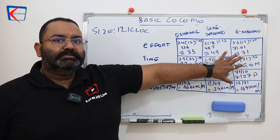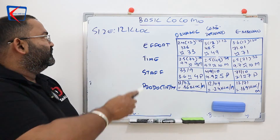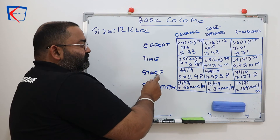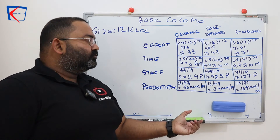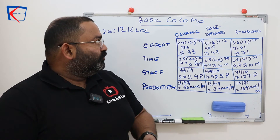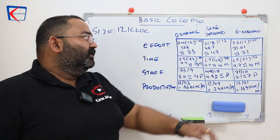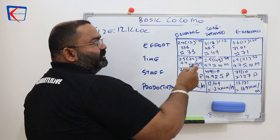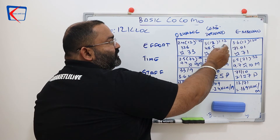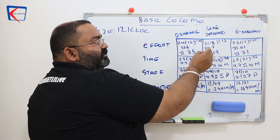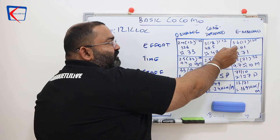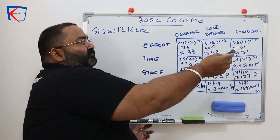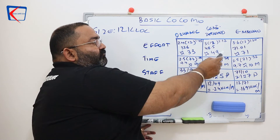Looking at this comparison table, the software size is 12 KLOC for all three. For organic, effort is 33 person-months. For semi-detached, effort is 49. As the project complexity increases from organic to semi-detached to embedded, the effort increases. The formulas are the same but the multiplier values differ — for semi-detached A=3 and for embedded A=3.6.